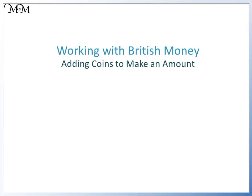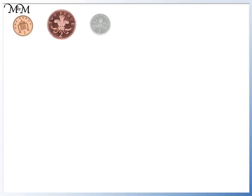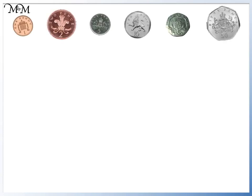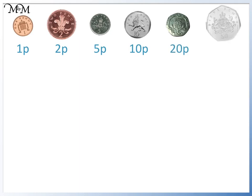Hi and welcome to our lesson on adding coins to make an amount. Here are the pence coins that are less than £1. This is 1p, 2p, 5p, 10p, 20p and 50p. We will use these coins to make an amount of money.